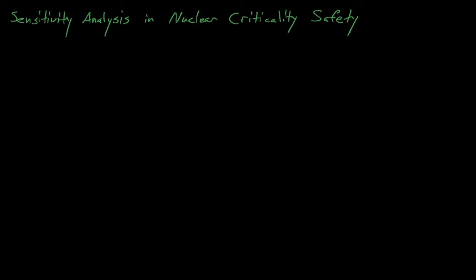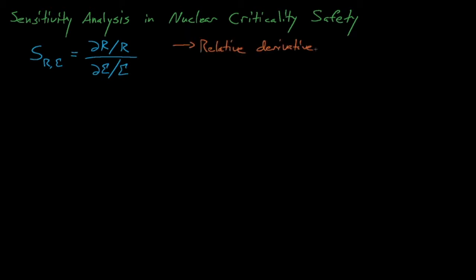So what are sensitivity coefficients? Sensitivity coefficients are essentially relative derivatives that describe how uncertainty or perturbations in some parameter sigma will affect some response R. In criticality safety applications, these uncertain input parameters could be neutron cross sections, fission spectrum distributions, angular scattering kinematics data, or any other nuclear data that is fed into a Monte Carlo criticality safety simulation.